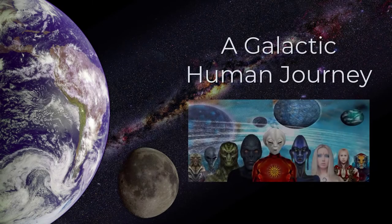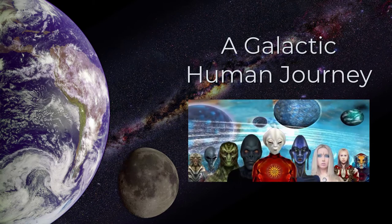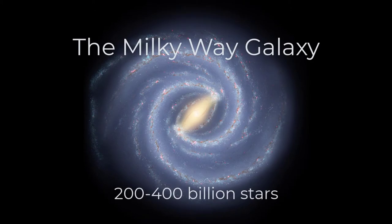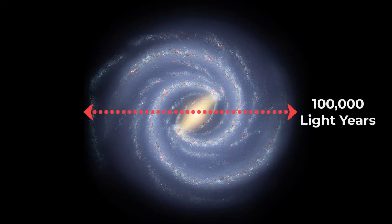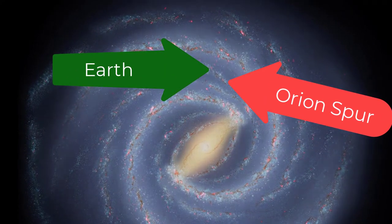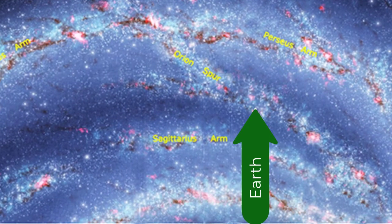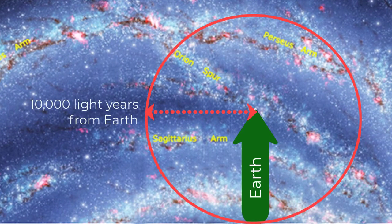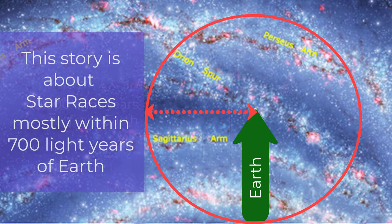A galactic human journey. This is the Milky Way galaxy with an estimated 200 to 400 billion stars. It's 100,000 light-years across. Here's the position of Earth within the Orion Spur. This red circle shows stars within 10,000 light-years of Earth. And this story is about star races mostly within 700 light-years of Earth.